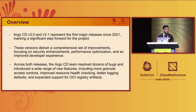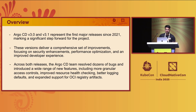Argo CD version 3.0 and Argo CD version 3.1, which got released August 4th, we're going to talk about the features and bug fixes introduced in both. Version 3.0 actually represents the first major release since 2021. Before that, we used to have versions like 2.7, 2.8, 2.14, and so on. This version came with a lot of feature requests, bug fixes, and one of the key features was OCI support. We also worked on adding a kubectl plugin mechanism.